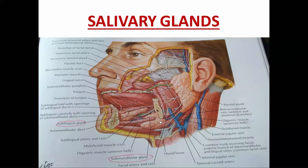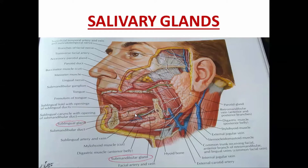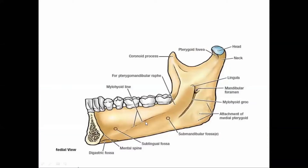Today we are going to study the other two major salivary glands: the submandibular and the sublingual gland. The submandibular gland is situated in the submandibular fossa of the mandible, below the mylohyoid line.